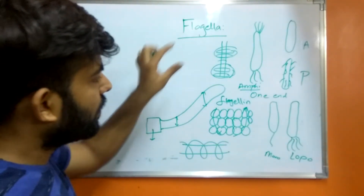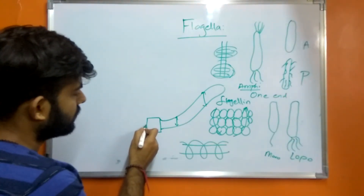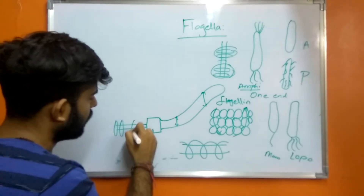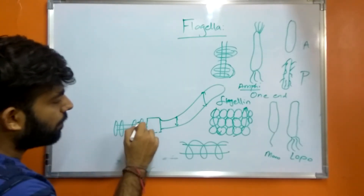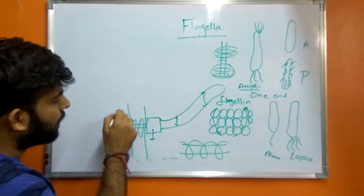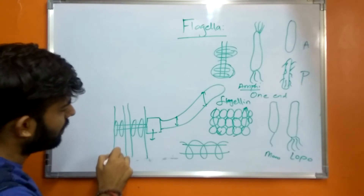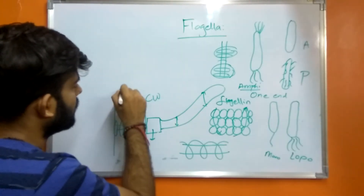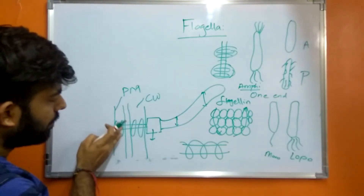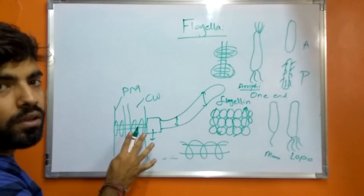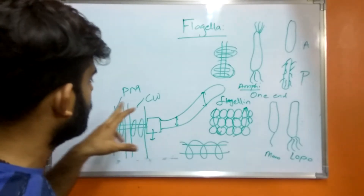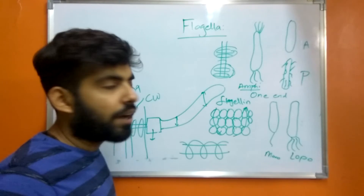In gram-negative organisms, the outer pair of rings is anchored to the different regions of the cell wall, whereas the inner pair of rings is anchored to the plasma membrane. In gram-positive organisms, there is no outer pair — only the inner pair anchored to the plasma membrane. This is the key difference in the basal body between gram-positive and gram-negative organisms.